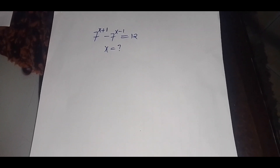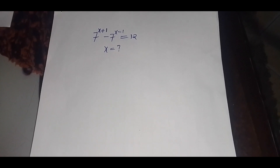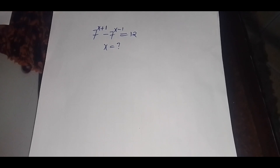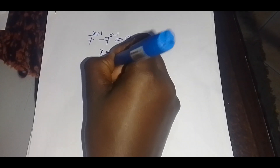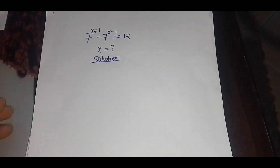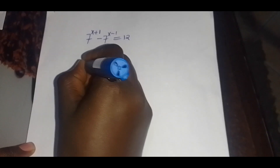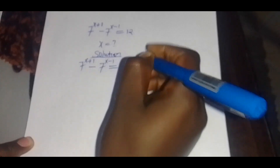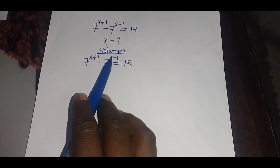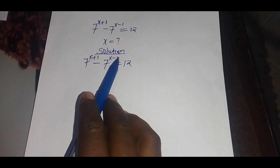Hello everyone, welcome back. We solve for the value of x given this exponential equation: we have 7 raised to power x plus one, minus 7 raised to power x minus one, and this is equal to 12. So what is the value of x?